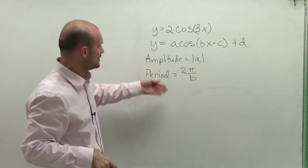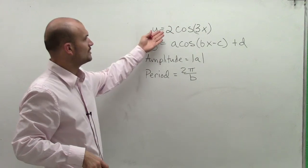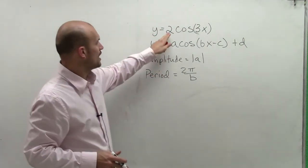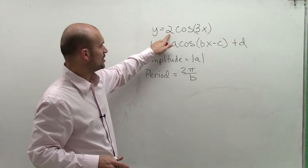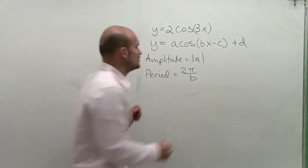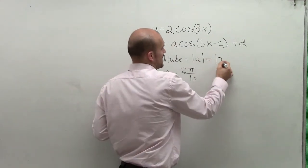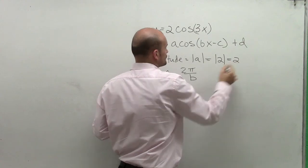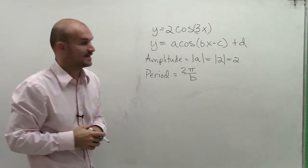Now, when we look at these two definitions and we go back and we look at our function, we can easily see that our a, which is our number that's going to be multiplied by cosine, is going to be 2. So the amplitude in this problem is the absolute value of 2, or we could just say it's 2.